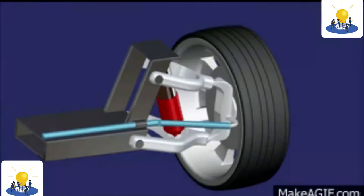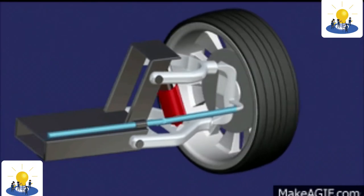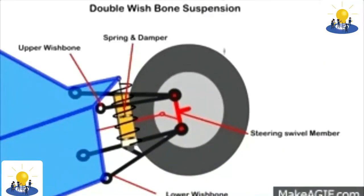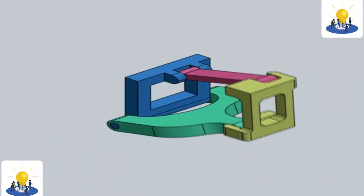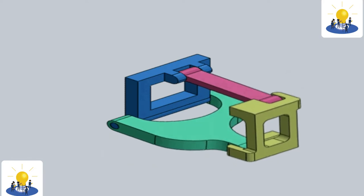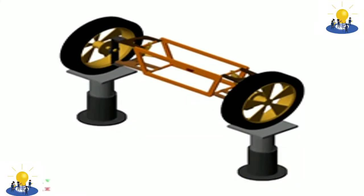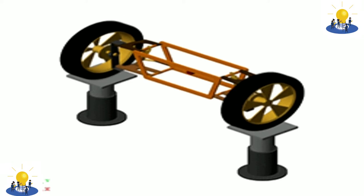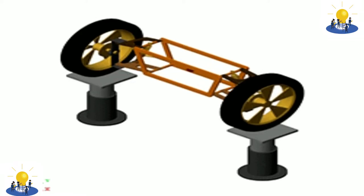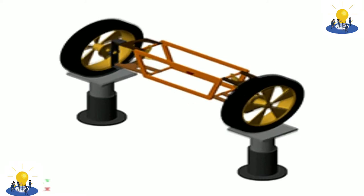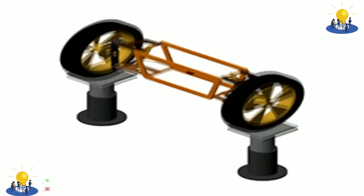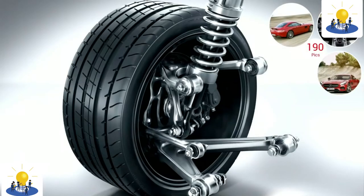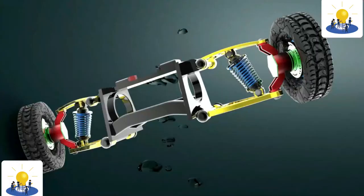Double wishbone suspension in action as on display at the Toyota Museum in Nagoya, Japan. At the knuckle end, single ball joints are typically used, in which case the steering loads have to be taken via a steering arm, and the wishbones look A- or L-shaped. An L-shaped arm is generally preferred on passenger vehicles because it allows a better compromise of handling and comfort. The bushing in line with the wheel can be kept relatively stiff to effectively handle cornering loads, while the offline joint can be softer to allow the wheel to recess under fore-aft impact loads.